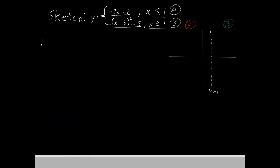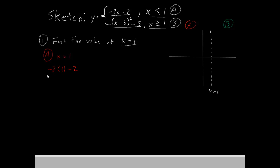The first thing we should do is find the value of each piece at x equals 1, because that's the critical point where piece a changes to piece b. Let's start with piece a. At x equals 1, our function says negative 2 times x minus 2. So if x is 1, it's negative 2 times 1 minus 2, which gives us negative 4. Since the condition is x less than 1 — no 'equal to' — that means an open circle. So we'll go along the dotted line, find negative 4, and place an open circle there.